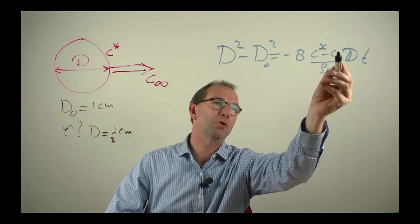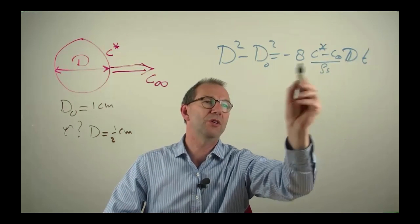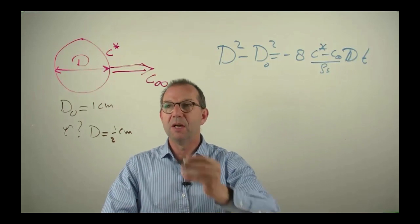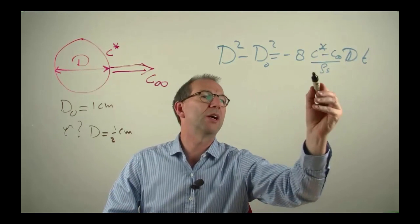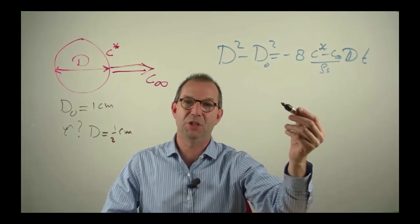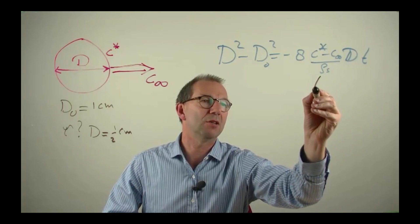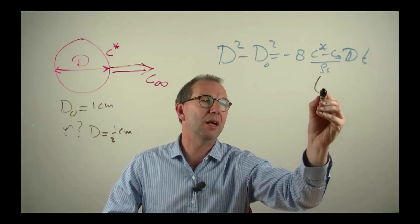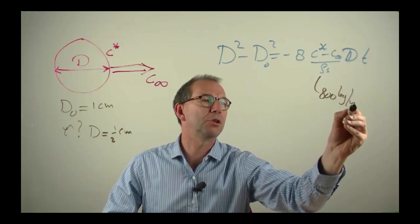On the other side I have two concentrations, a diffusion coefficient and the density of the material. The density of the material is on the order of that of water, slightly less for these materials, they float. So let's just put in a number 800 kg per cube.